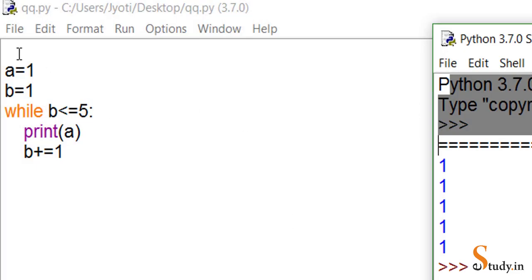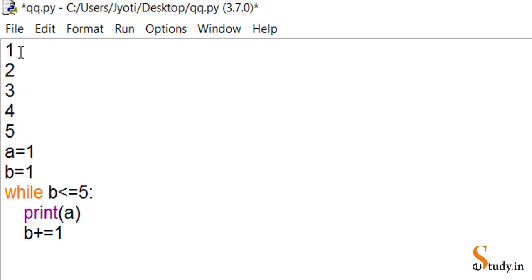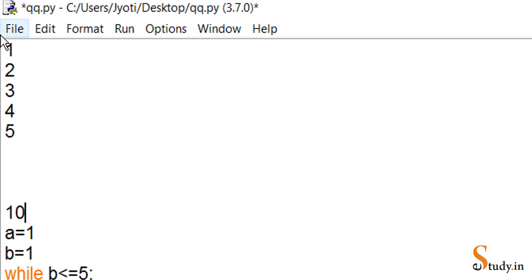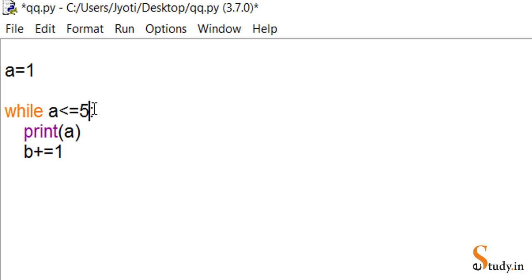Now let's take another program to print the first ten natural numbers — the output should be one, two, three, four, five, up to ten. In this program, we set 'a = 1'. We don't need a second variable this time. We write 'while a is less than or equal to 10', put a colon, then print(a).